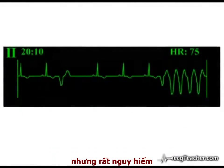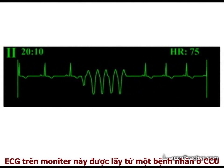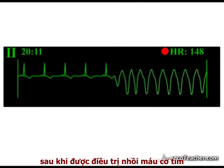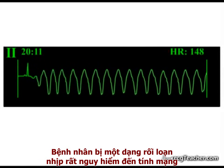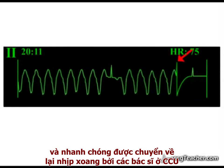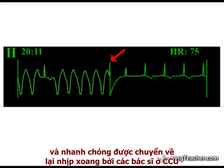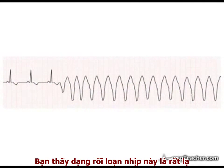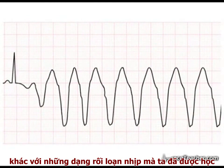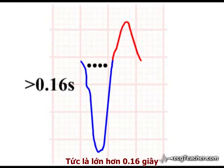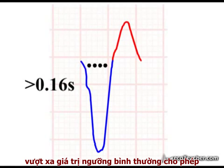We will now consider a common and very dangerous arrhythmia. The readout on this monitor is from a patient admitted to CCU following treatment for an acute myocardial infarction. The patient has just developed a potentially life-threatening arrhythmia, lost consciousness, and is quickly cardioverted back into sinus rhythm by the CCU staff. Looking at a printout from the monitor at the time of the attack, this tachyarrhythmia is quite different from those we have considered up to now. The QRS complexes are broad at over four small squares in width — greater than 0.16 seconds in duration — well beyond our upper limit of normal.